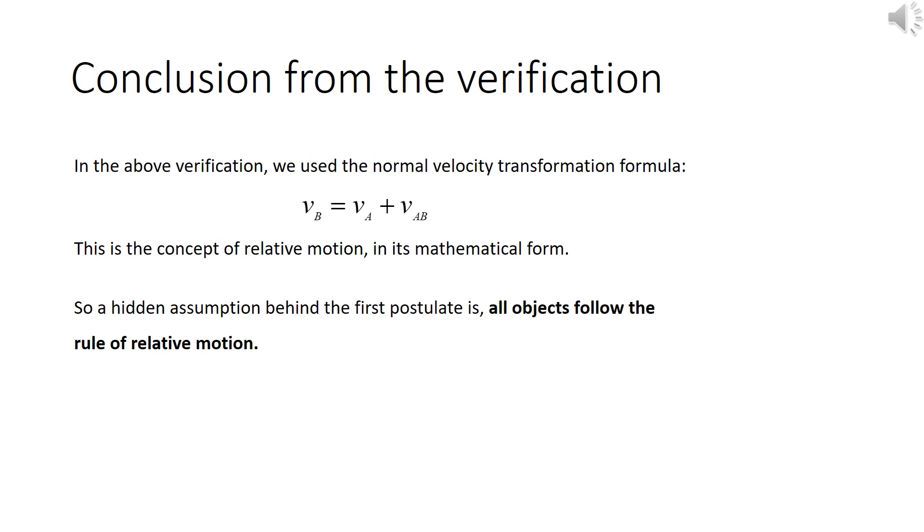What is our conclusion from the verification? In the above verification, we use the normal velocity transformation formula. This is a concept of relative motion in its mathematical form, so a hidden assumption behind the first postulate is, all objects follow the rule of relative motion.